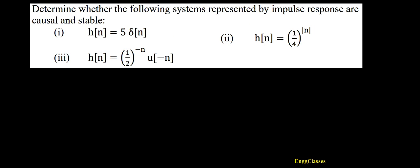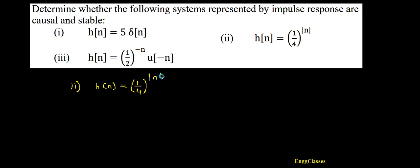Hello everyone, welcome to NG Classes' YouTube channel. In this video lecture, we consider determining whether the following systems represented by the impulse response are causal and stable. We'll consider the second numerical — the first was covered in the previous video. Here, h(n) equals (1/4) to the power of the magnitude of n.